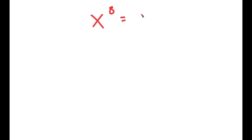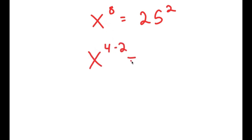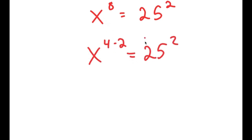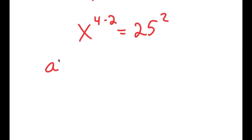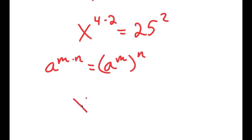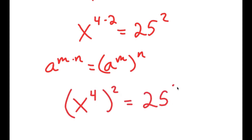In this video, I'm going to solve the equation x to the power of 8 is equal to 25 squared. To solve this, I'm going to first rewrite this as x to the power of 4 times 2 is equal to 25 squared. Using the property a to the power of m times n equals a to the power of m to the power of n, x to the power of 4 times 2 becomes x to the power of 4 to the power of 2, and this equals 25 squared.